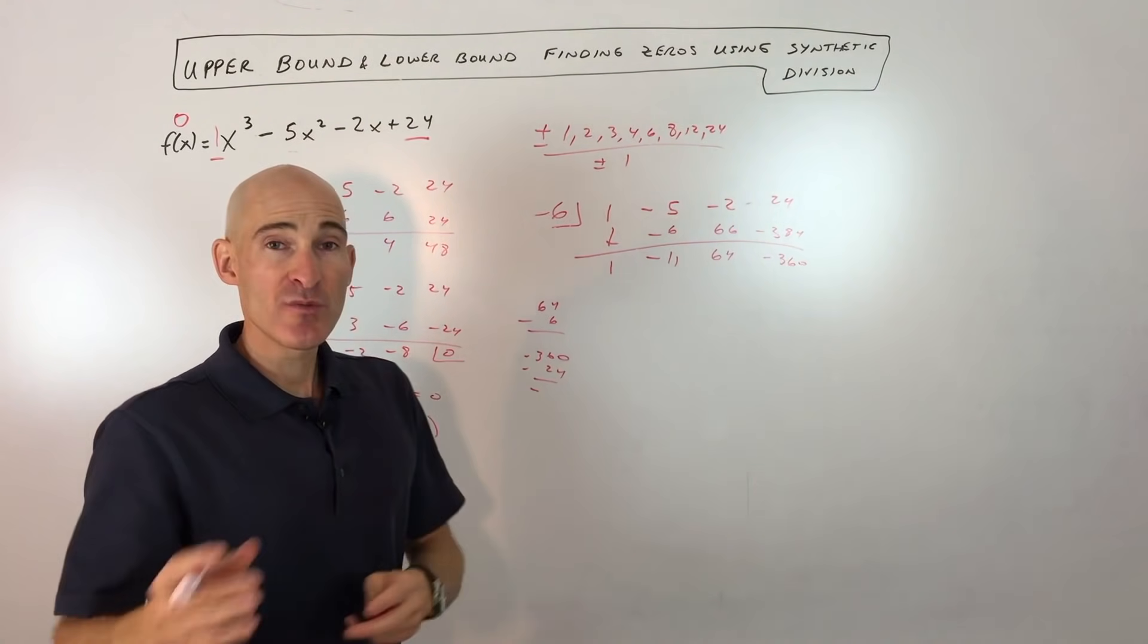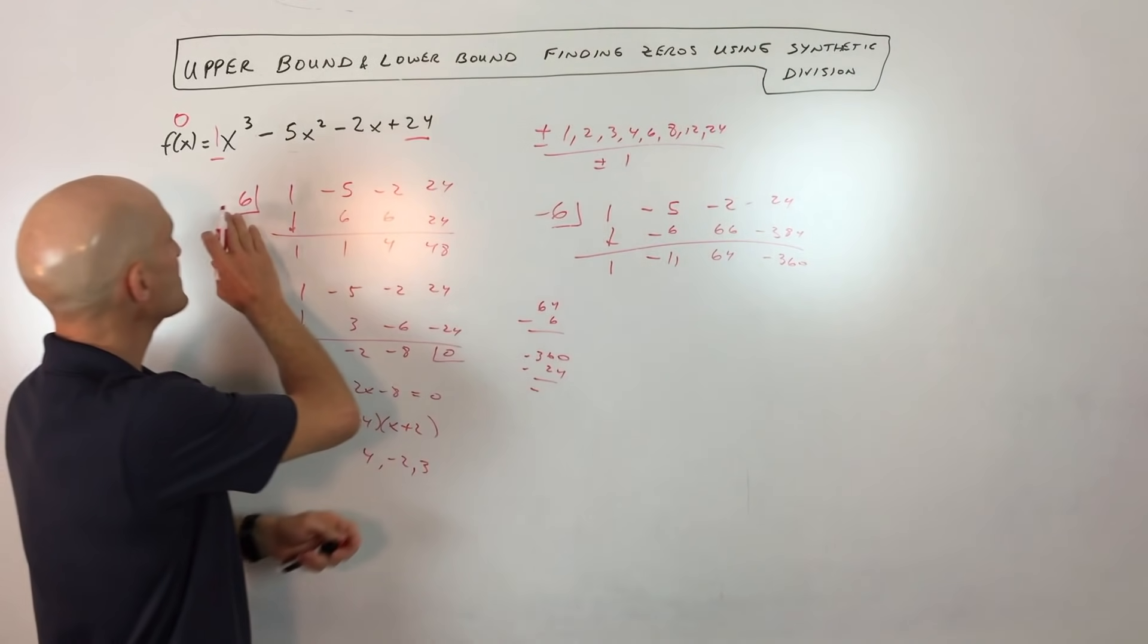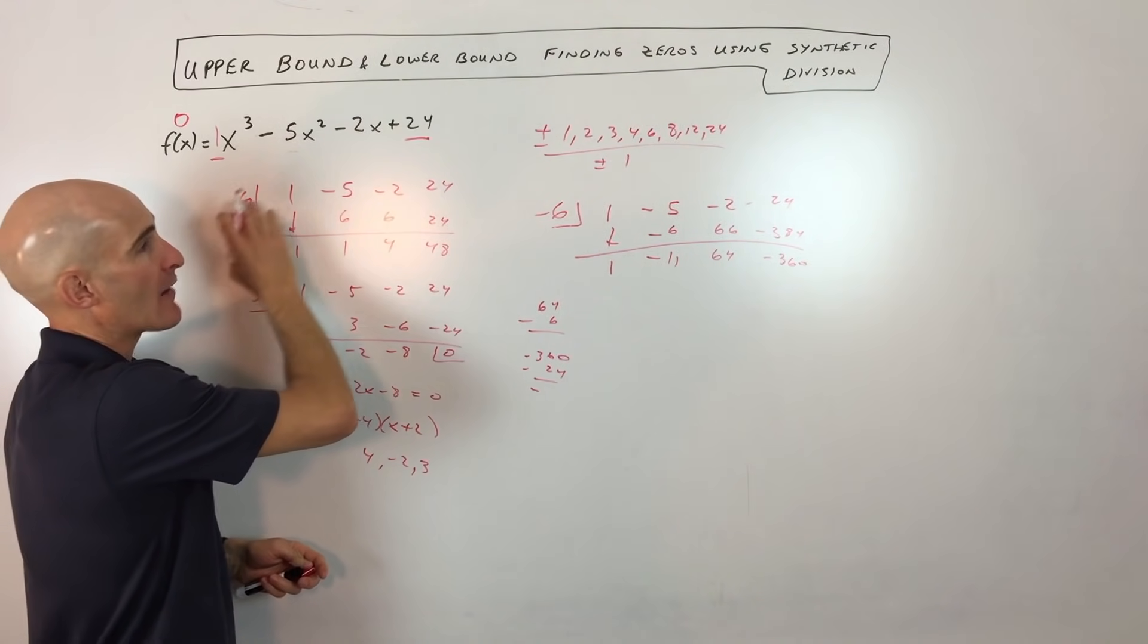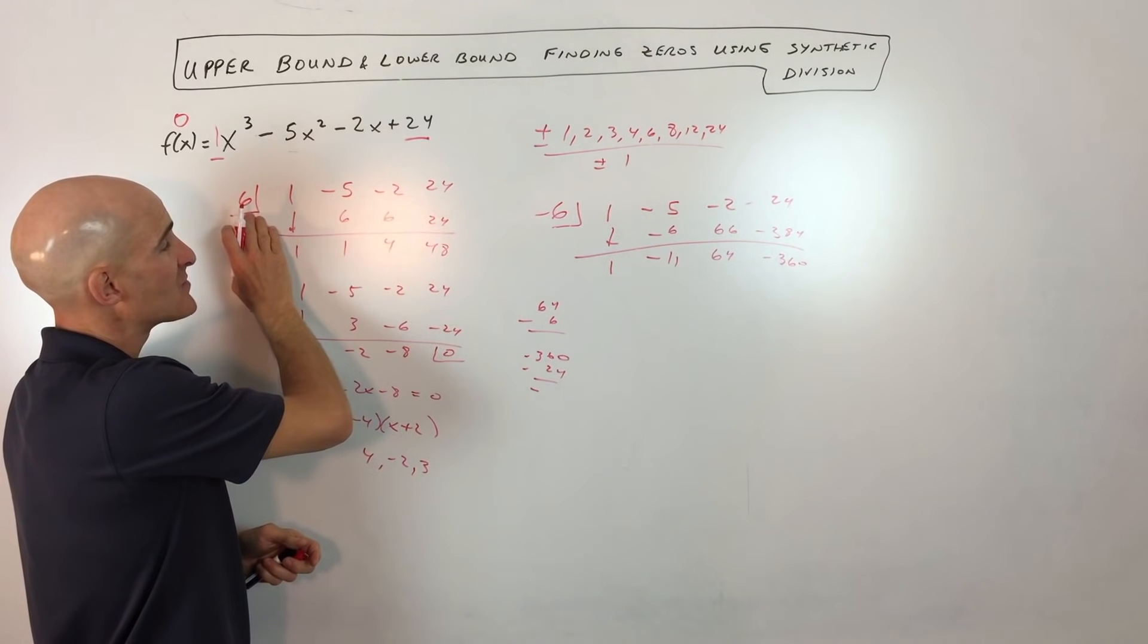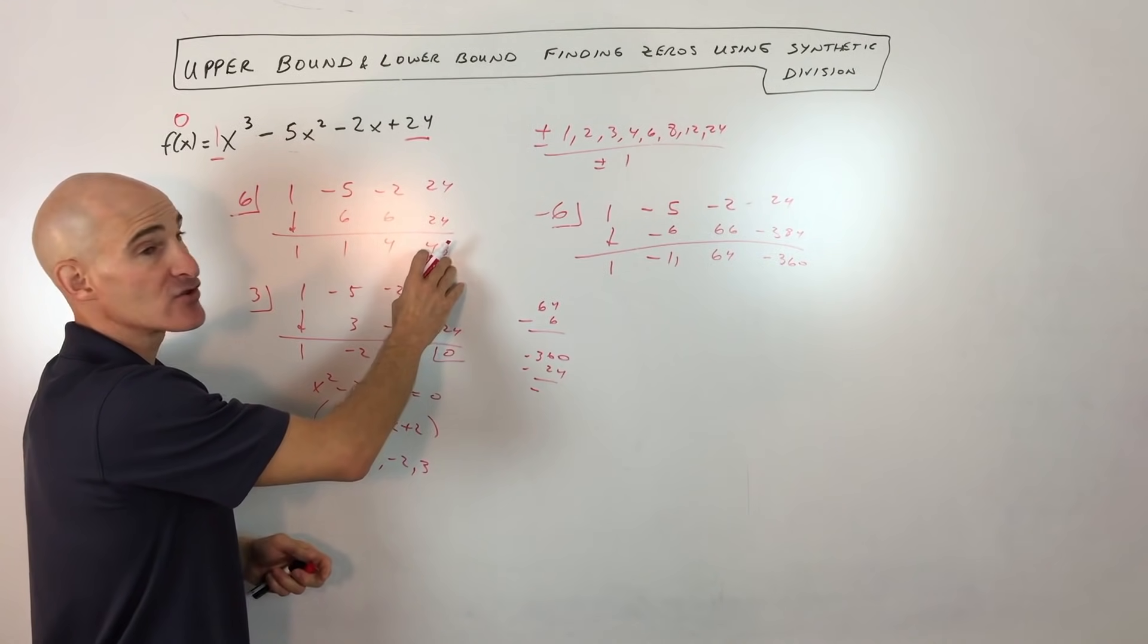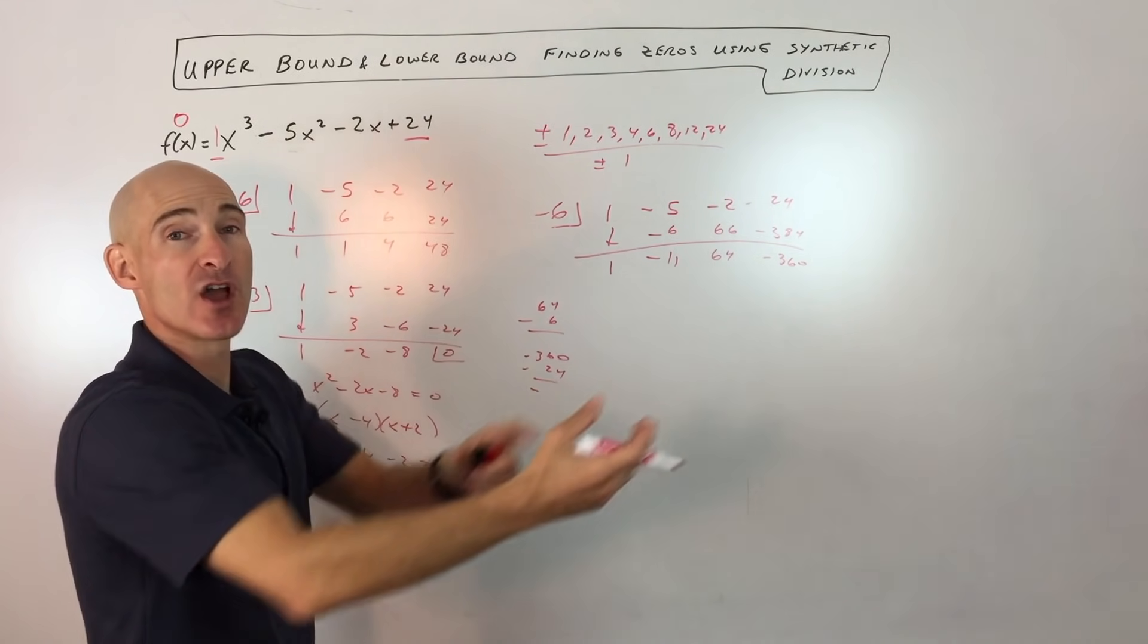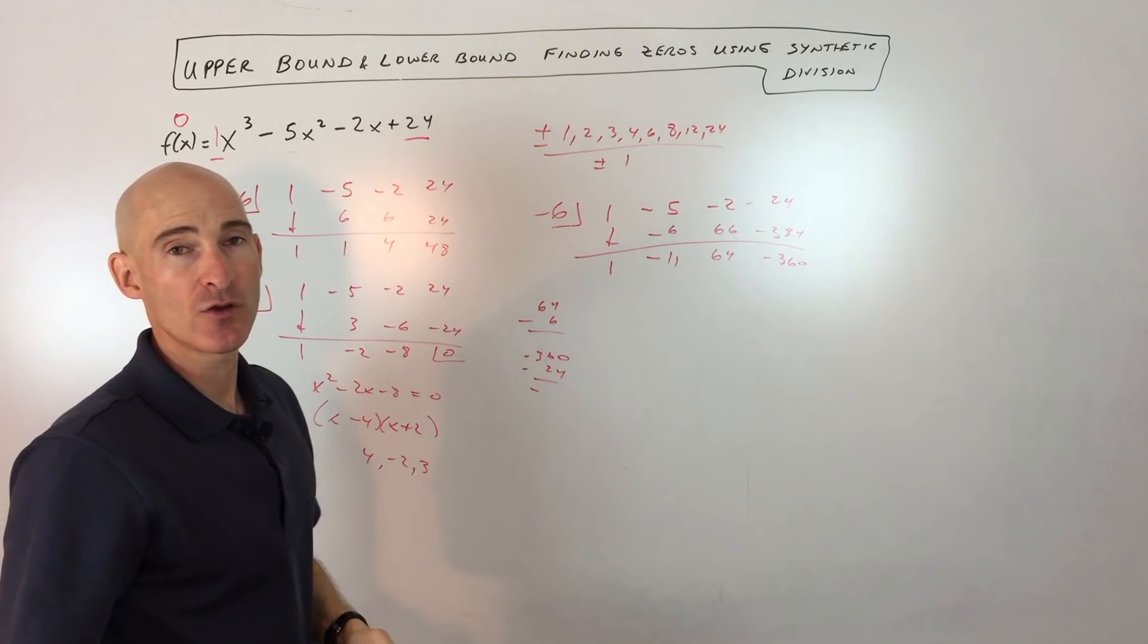So again, just remember that if you're checking for a positive zero, after you write this list of rational zeros, pick a positive zero. If you end up getting all positives down here, that tells you that that's an upper bound. There's nothing that's going to be larger or greater than that quantity.